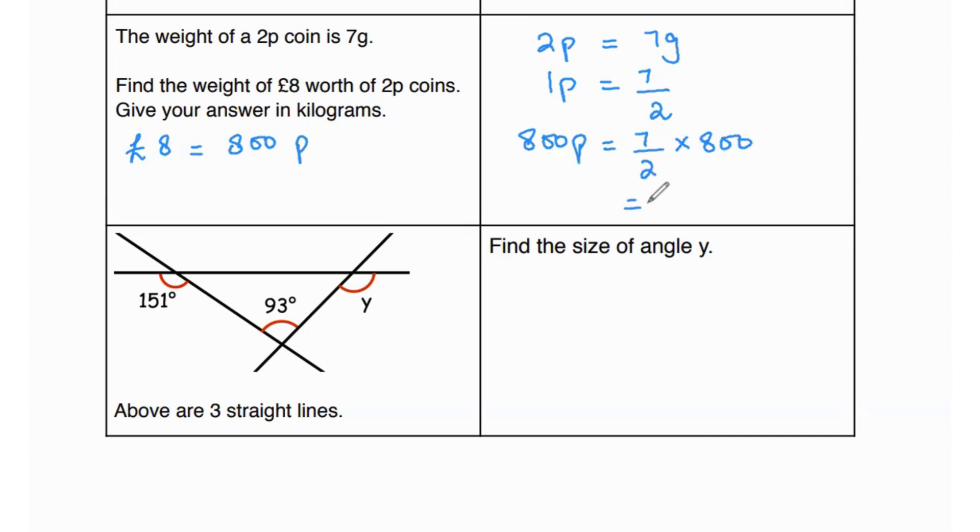This gives us 2,800 grams. Now the question says give your answer in kilograms. 1 gram is 1 over 1,000 kilograms. So 2,800 divided by 1,000 equals 2.8 kilograms. That is your answer.